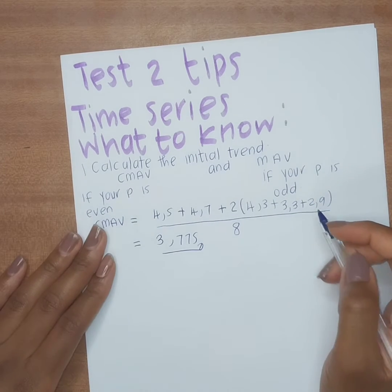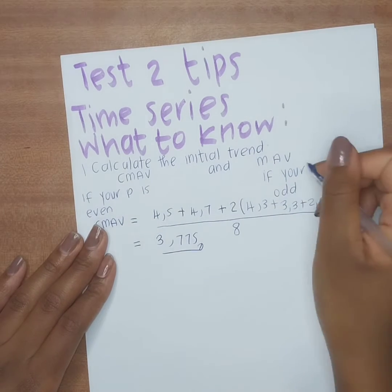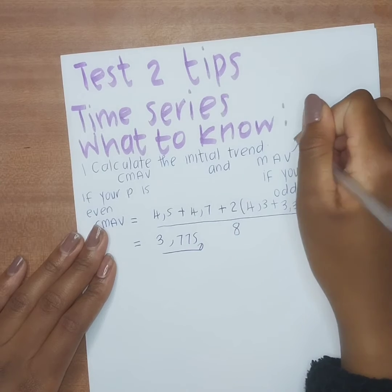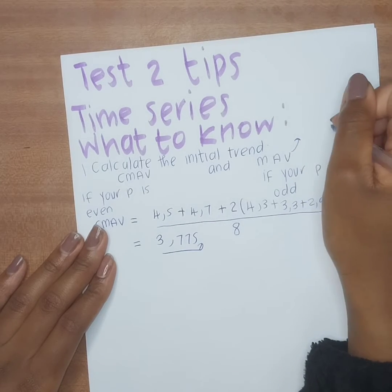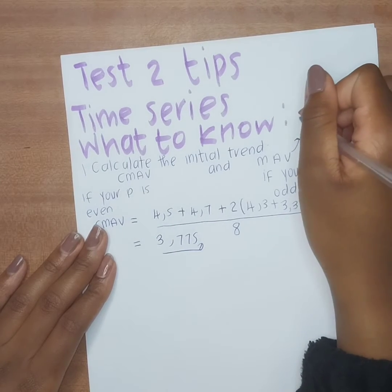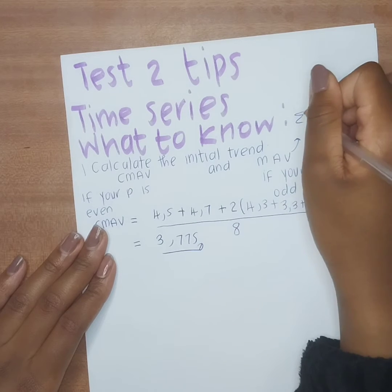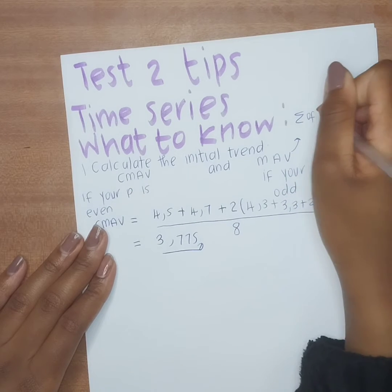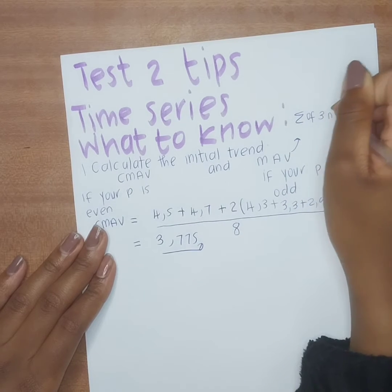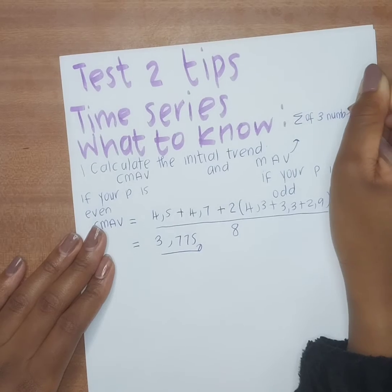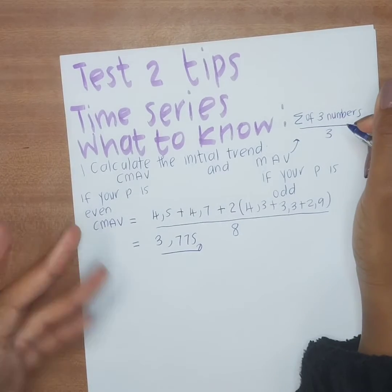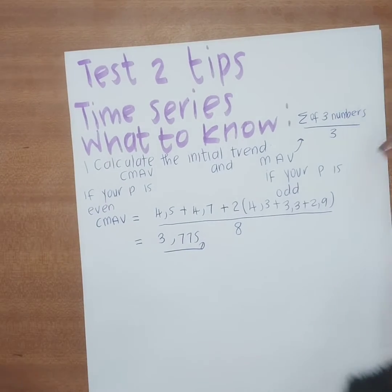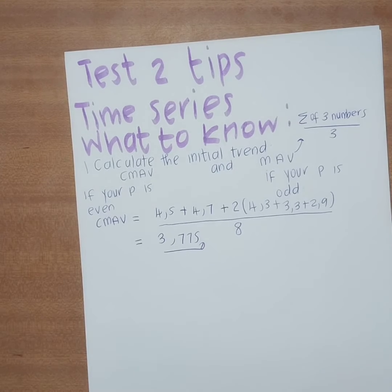For the MAV when p is odd, you calculate the sum of three numbers divided by three — simply the average of three values. If you know how to do that, you're fine.